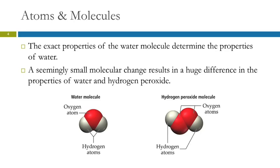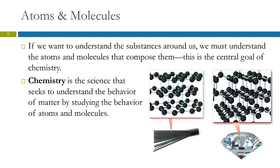If we make a little change in the molecule, it can make a very big difference in the properties of the substance. Here's water, and here's hydrogen peroxide. The difference is this one has two oxygen atoms and two hydrogens, and this one has one oxygen and two hydrogens — a small difference, but the properties are very different. You need to drink water to stay alive, but if you drink hydrogen peroxide, it would kill you. There's even a joke about that: two guys walk into a bar, and the first one says, 'I'll have a glass of H2O.' The next guy says, 'I'll have H2O too.' And he drinks it and dies.